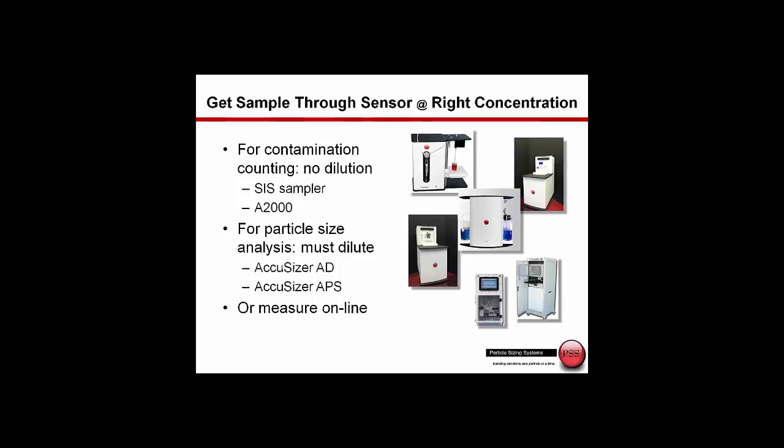So that's the sensor technology. We have a pulse size analyzer, which acts as the counter, but we also have different samplers in order to transport the sample through the sensor and also, if required, to do automatic dilution. The SIS sampler uses a syringe pump to draw the sample directly up through the sensor with no dilution. The A2000 system can have a single pump where we draw the sample directly through the sensor, or if we need to perform dilution, we can add an additional pump and draw a filtered diluent, mix that, and pass it through the sensor.